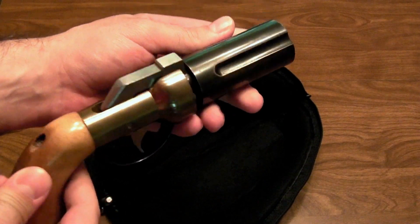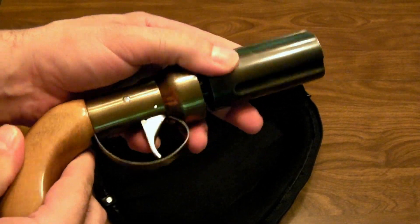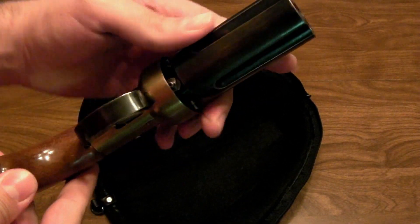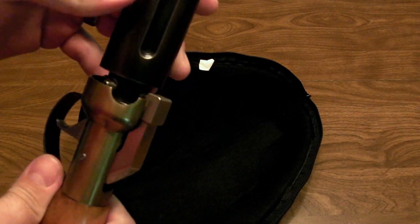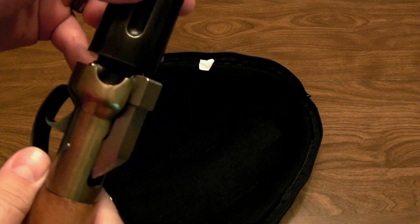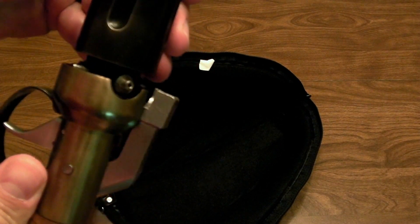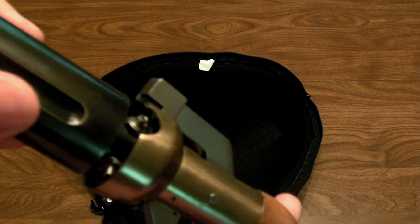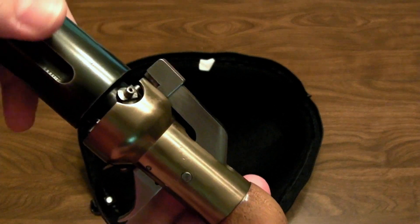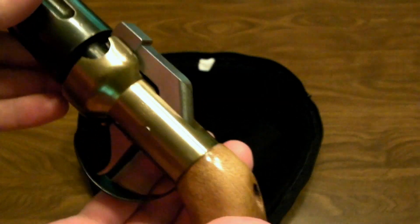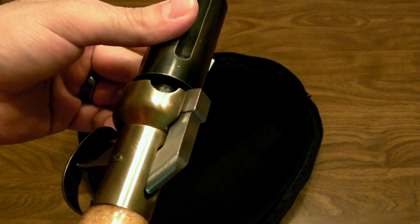I think the kit was a CVA, Connecticut Valley Arms. I'm not really sure, I don't remember about that. But it's pretty simple. It takes a percussion cap to fire it. You'll see right there, there's the nipple for the percussion cap. So you put one percussion cap on each of the barrels.